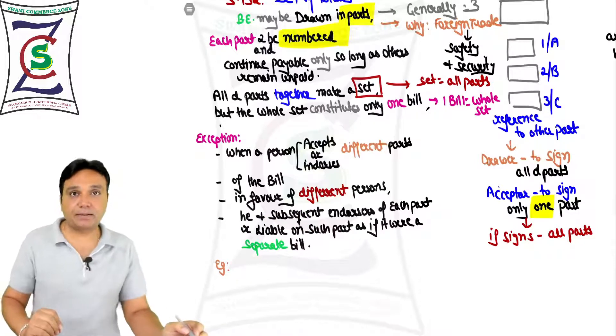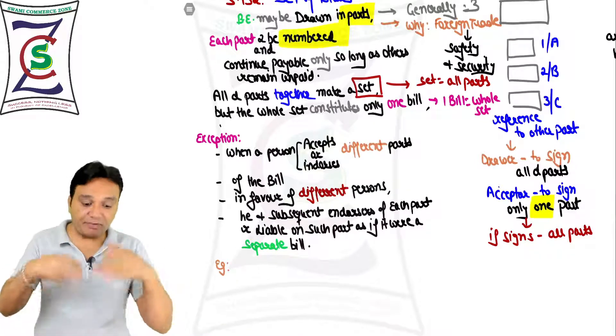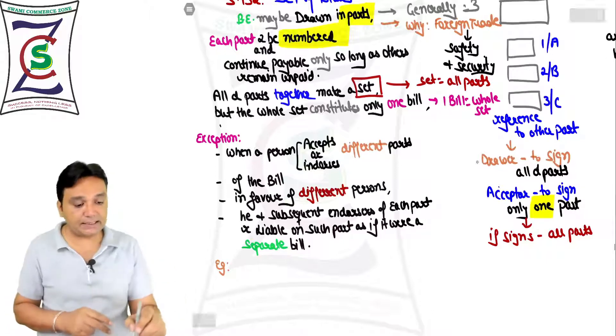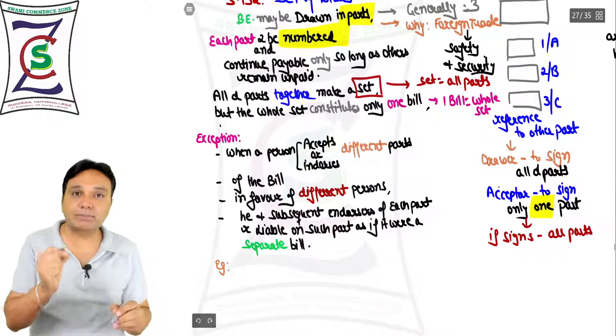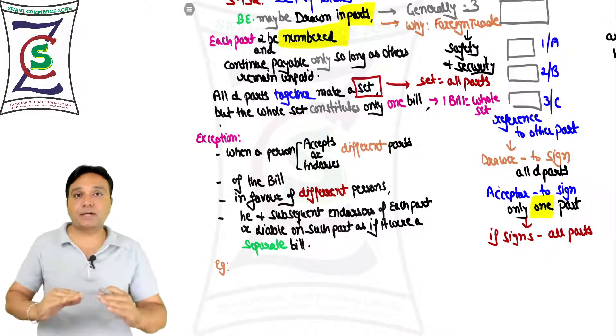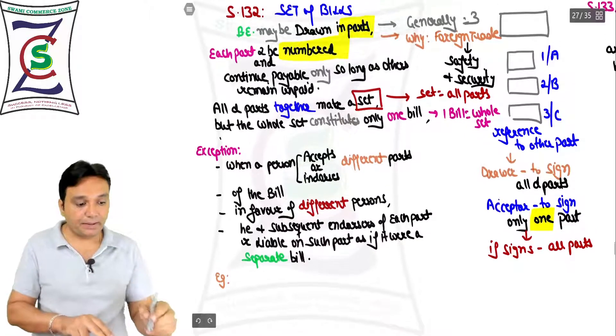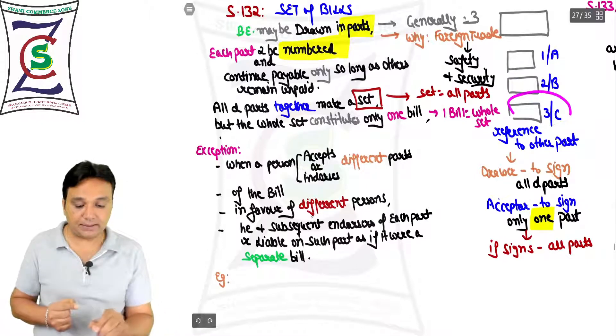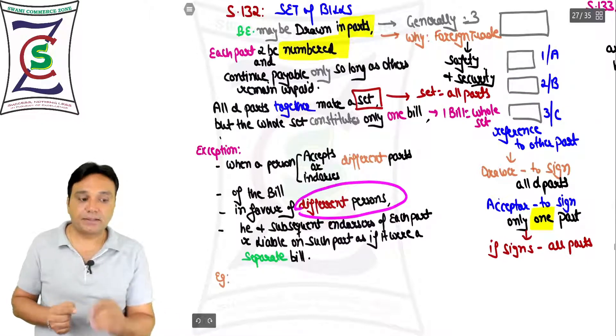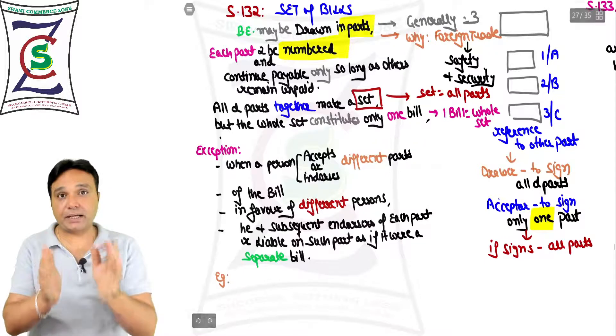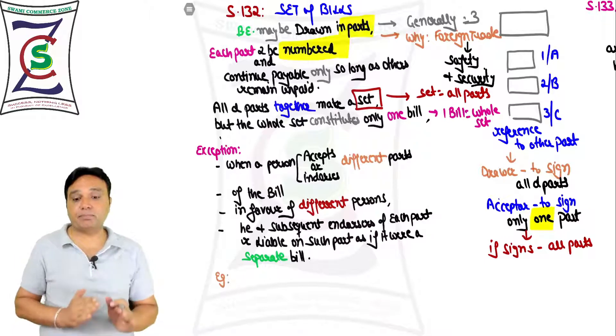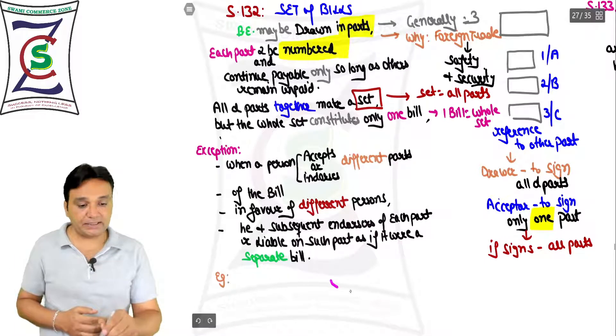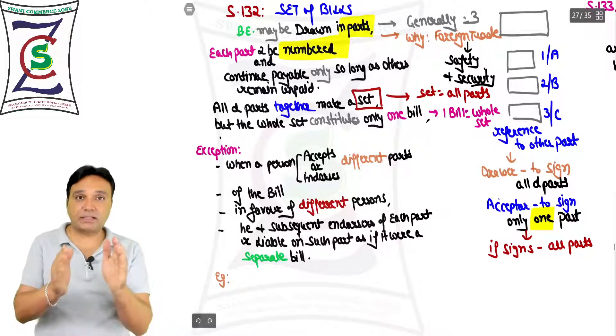When a person accepts or endorses different parts in favor of different persons, he and subsequent endorsers of such part are liable on such part as if it were a separate bill. You are accepting all the parts in favor of different persons.